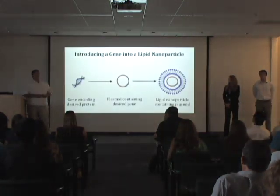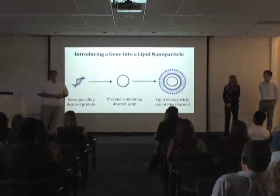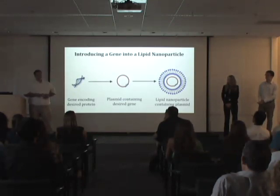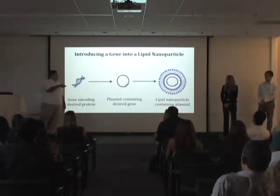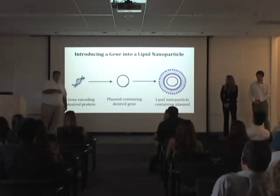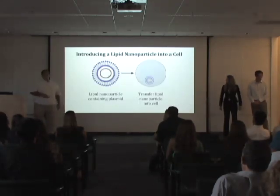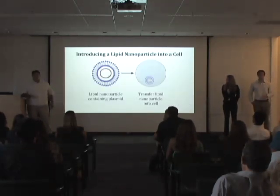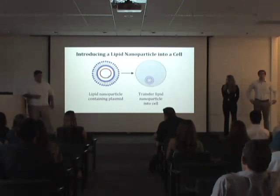What we do is we take the gene and apply it to a circular DNA chain called a plasmid. We then encase that plasmid into a series of lipid nanoparticles, which we can directly introduce to the cell itself, creating an absorption sheet.